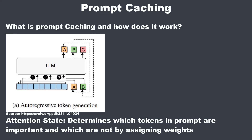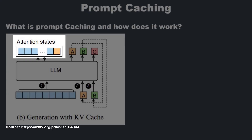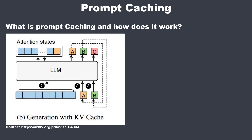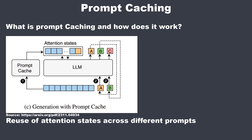To address this, a so-called key-value cache stores the attention states after they've been computed, so they don't have to be recalculated with each new token. This speeds up the generation process significantly. While the key-value cache helps within a single prompt, the prompt cache takes this further by allowing the reuse of attention states across different prompts.